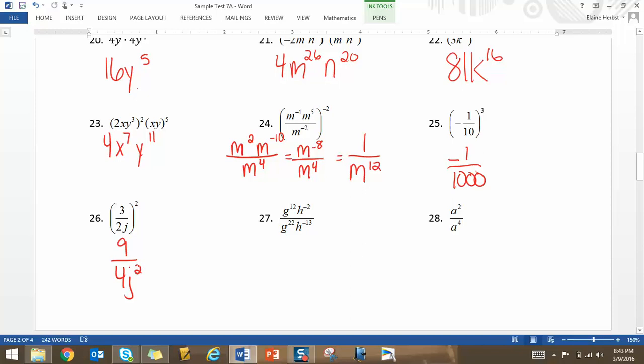27, 12 minus 22 is a negative 10. So that g is going to be on the bottom. G to the tenth on the bottom. And negative 2 minus negative 13 is positive 11. Which means the h stays on top.